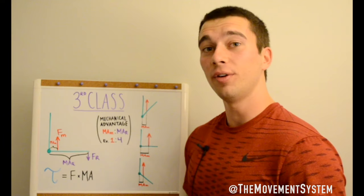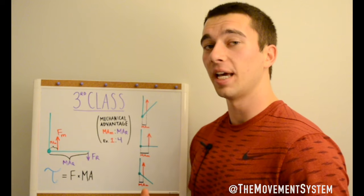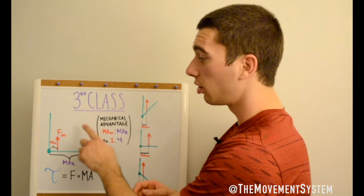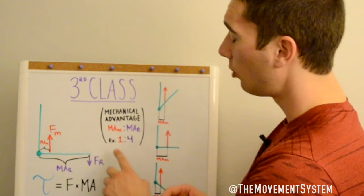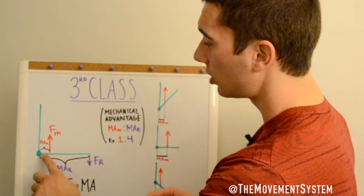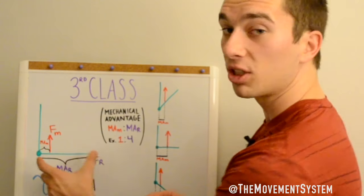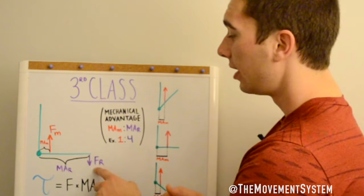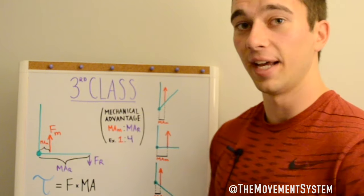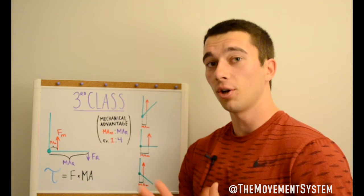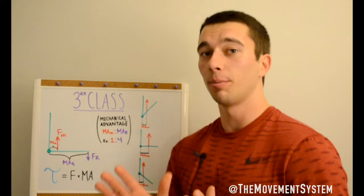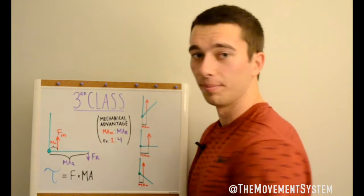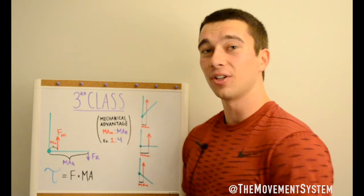Mechanical advantage is a simple ratio of the moment arms — force doesn't matter, just the ratio of the moment arm of the muscle to the moment arm of the resistance. In most muscles, which are third-class levers, the mechanical advantage is somewhat disadvantaged for the muscle. The moment arm of the muscle is a smaller distance, say one, while resistance is applied much farther away, say four — so the muscle has to work four times as hard. Think of pushing a door: the farther from the hinge, the easier it is to push.